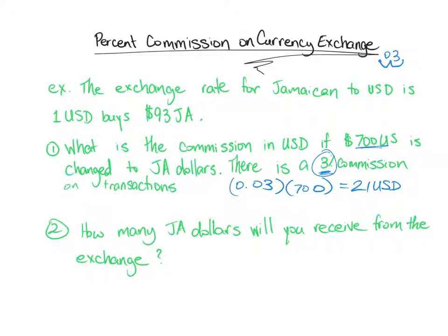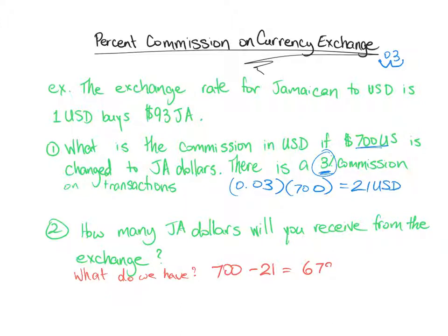We're going to be paying the bank 21 US dollars — that's money we no longer have. To exchange our money we have to account for that. We had 700 dollars, we paid the bank 21 US dollars, which means we have 679 US dollars left. That's what we're going to exchange.